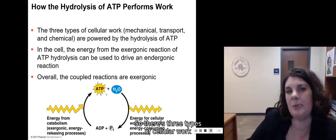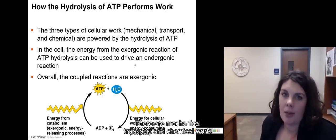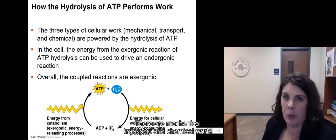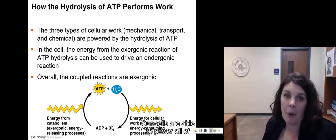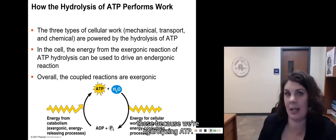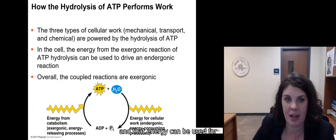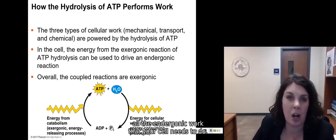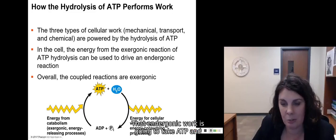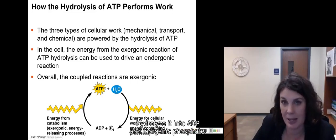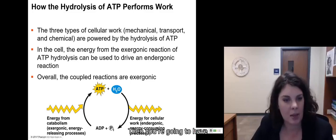Okay. So those three types of cellular work that we talked about in that last video, they are mechanical, transport, and chemical work. Our cells are able to power all of those because we are hydrolyzing ATP. In hydrolyzing ATP, we are releasing energy and that energy can be used for all the endergonic work that your cell needs to do. That endergonic work is going to take ATP and hydrolyze it into ADP and inorganic phosphate.